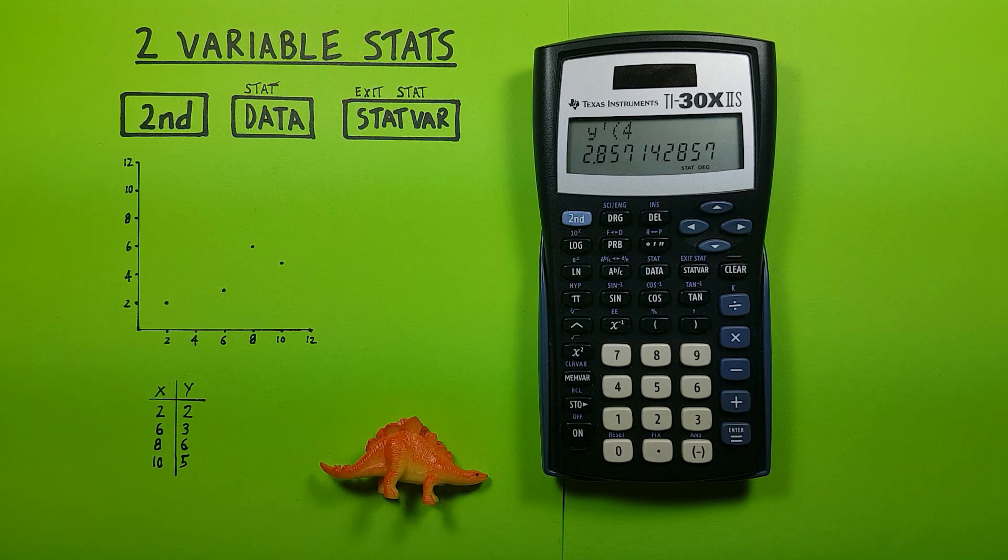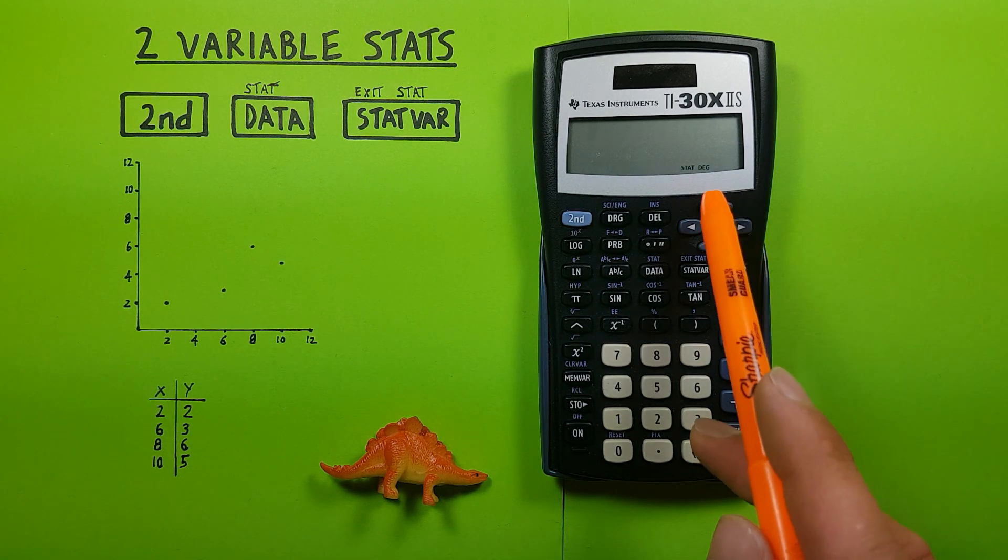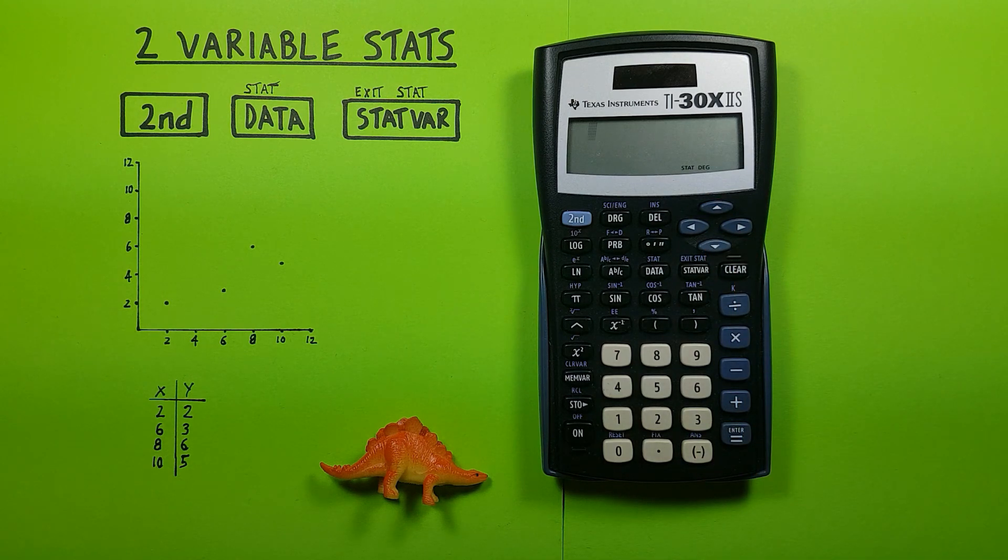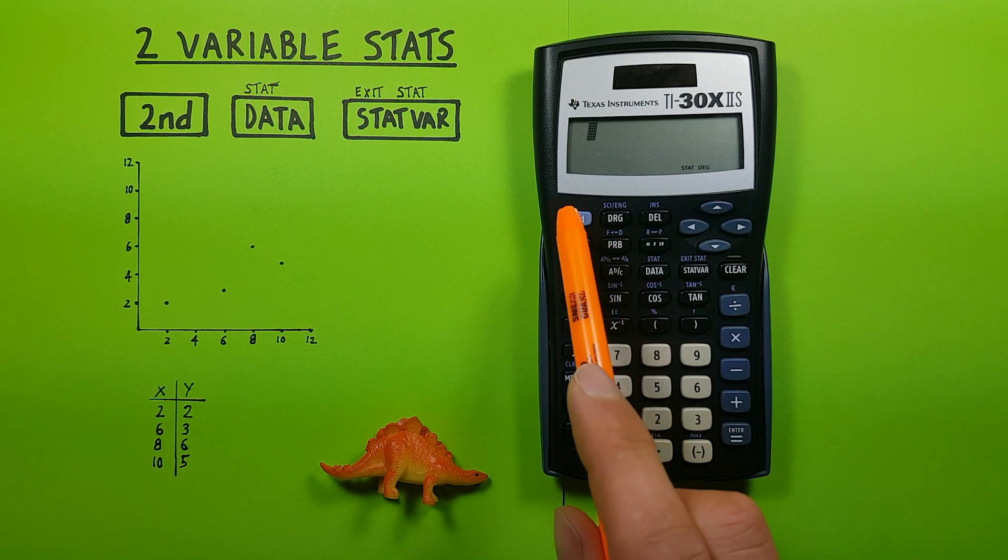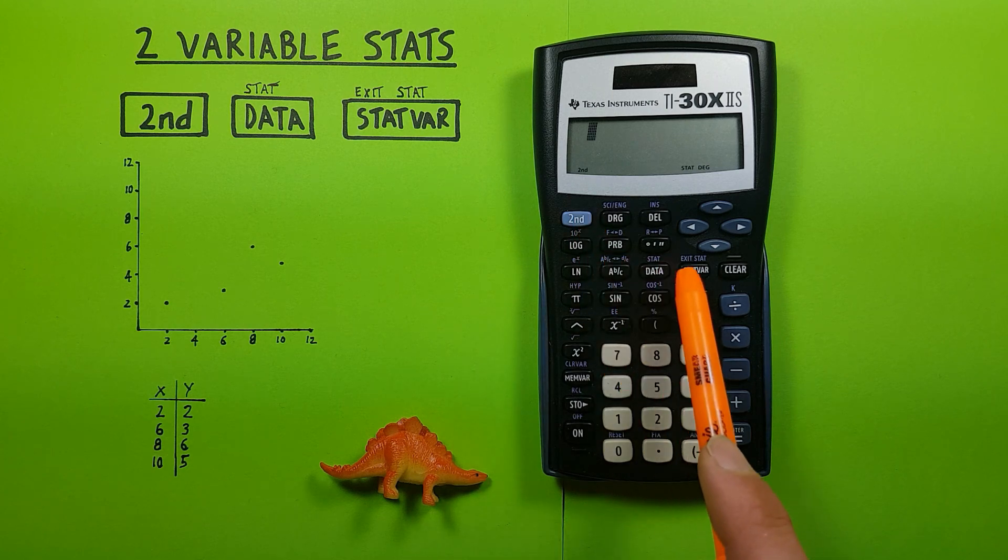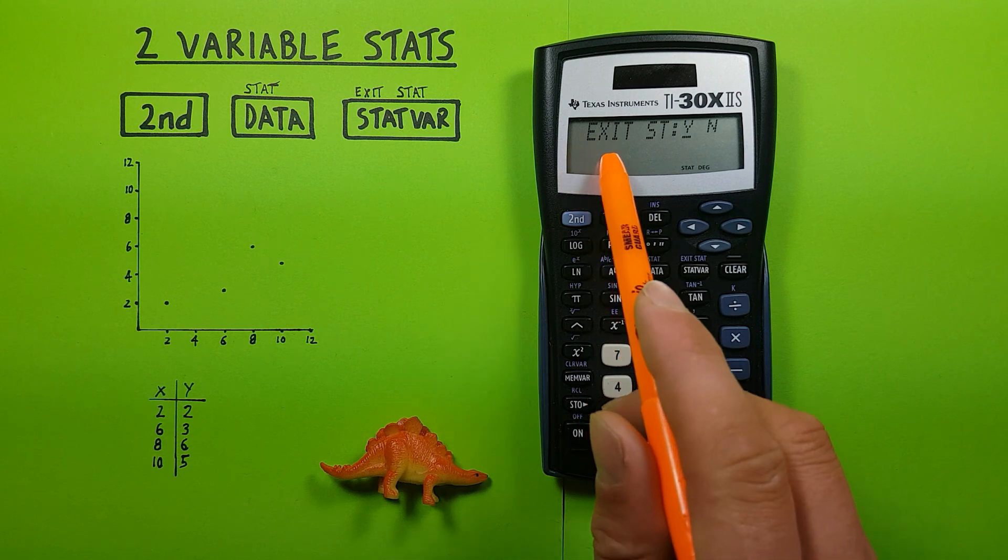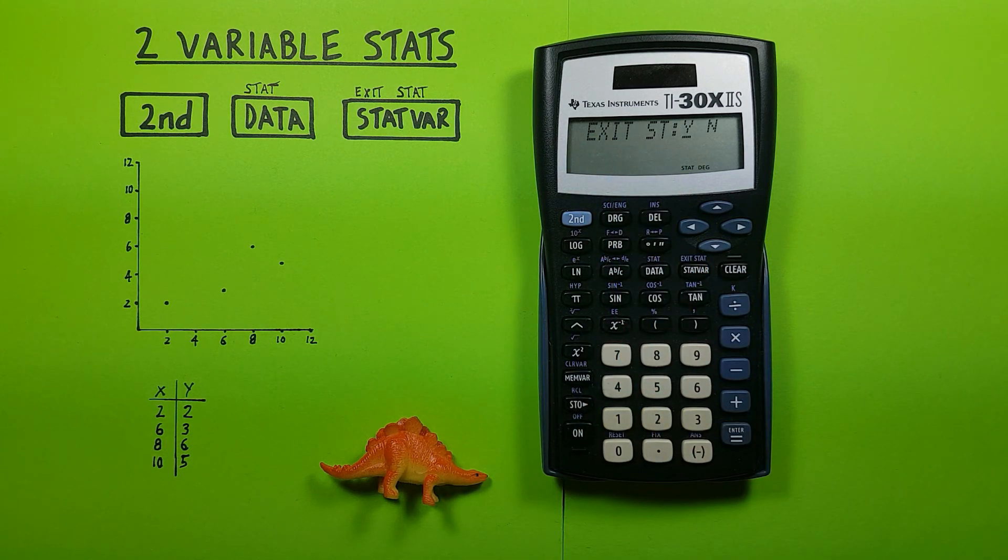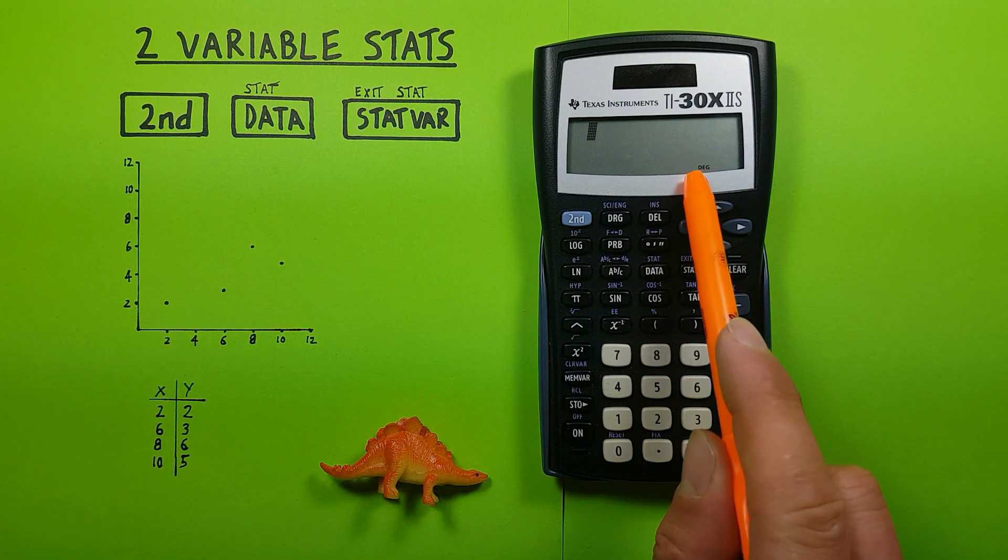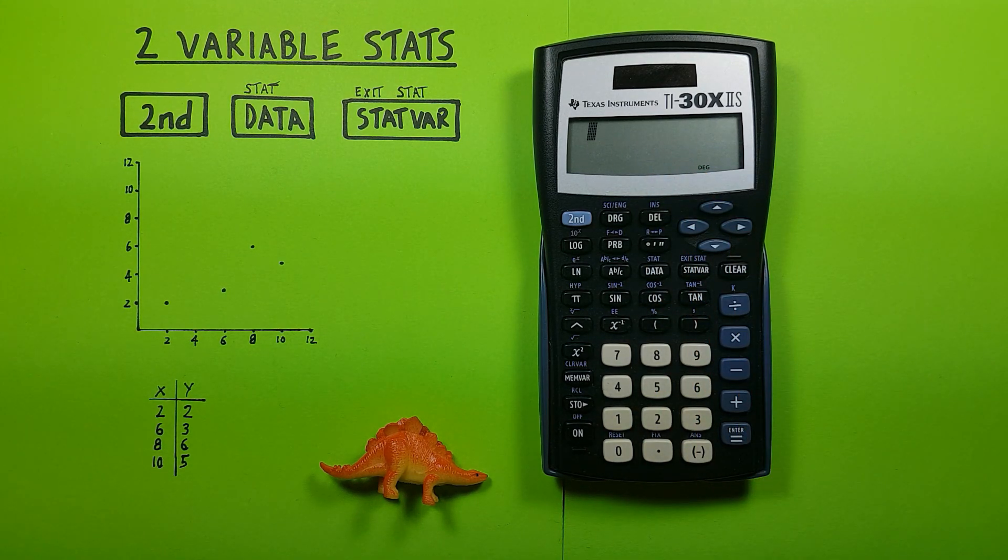All right, once we're done we can press clear. And then if we want to get out of statistics mode we just press second function stat var, brings up this screen here, exit stat or exit statistics mode. We highlight the yes and press enter. And now you can see the stat at the bottom of the screen is gone and we're back to regular mode. All right, I hope this helps and good luck on those tests out there everybody.